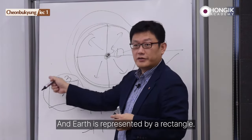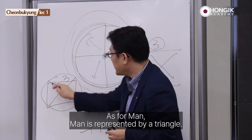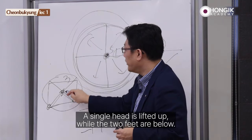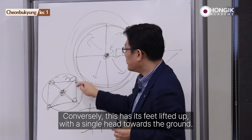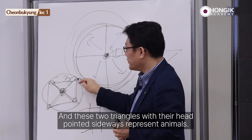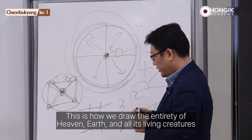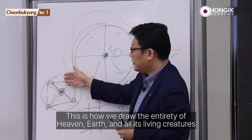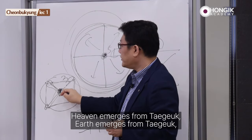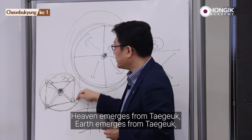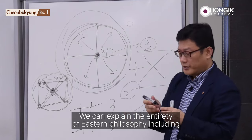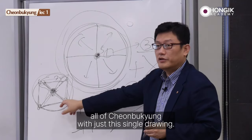Earth is represented by a rectangle. As for man, man is represented by a triangle — a single head is lifted up while the two feet are below. Conversely, plants have their feet lifted up with a single head towards the ground. And the two triangles with their head pointed sideways represent animals. This is how we draw the entirety of Heaven, Earth, and all its living creatures into a single drawing, with this most crucial center representing Taeguk. Heaven, Earth, and all the various life forms emerge from Taeguk. We can explain the entirety of Eastern philosophy, including all of Cheonbukyong, with just this single drawing.